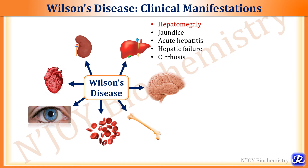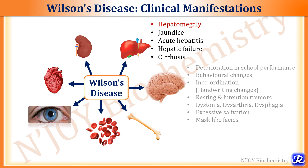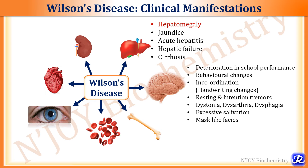Due to copper toxicity and deposition in hepatocytes, it results in hepatomegaly, jaundice, acute hepatitis, hepatic failure, and cirrhosis. When it affects the CNS, in children there can be deterioration in school performance, behavioral changes, incoordination, change in handwriting, resting and intention tremors, dystonia, inability to speak, dysarthria, difficulty in swallowing, excessive salivation, and mask-like facies.